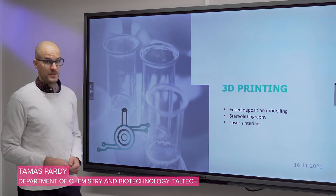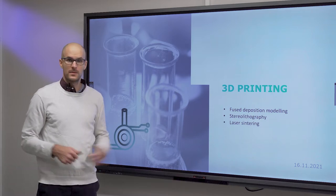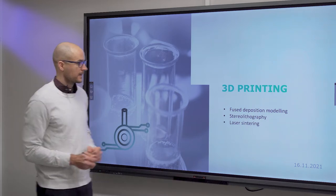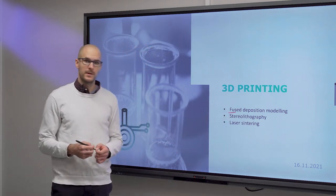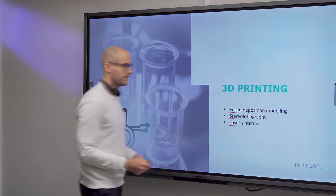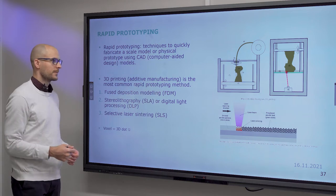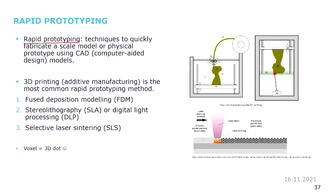In this video I will talk about 3D printing, which is something that you will have hands-on experience with in the lab. We talk about FDM, or Fused Deposition Modeling, which is the most common type of 3D printer that you can find, stereolithography, and laser sintering. Rapid prototyping — these are techniques to quickly fabricate a scale model or a physical prototype using computer-aided design models. And 3D printing is one of the most common rapid prototyping methods, which we can also use in microfluidics.